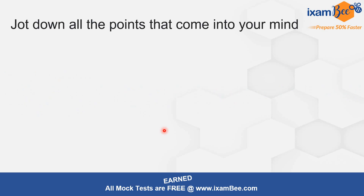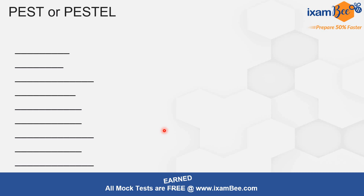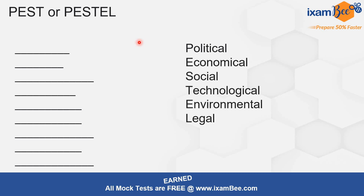The first thing you must do after selecting an essay topic is jotting down all the points that come to your mind. Then the next step is to analyze whether these points cover at least some aspects of the PESTEL framework: political, economical, social, technological, environmental, and legal. It is not very easy to include all six aspects in an essay, but at least three of them should serve the purpose. It is also possible that your economical and social aspects may overlap, or your social and environmental aspects may overlap — and that is perfectly okay.